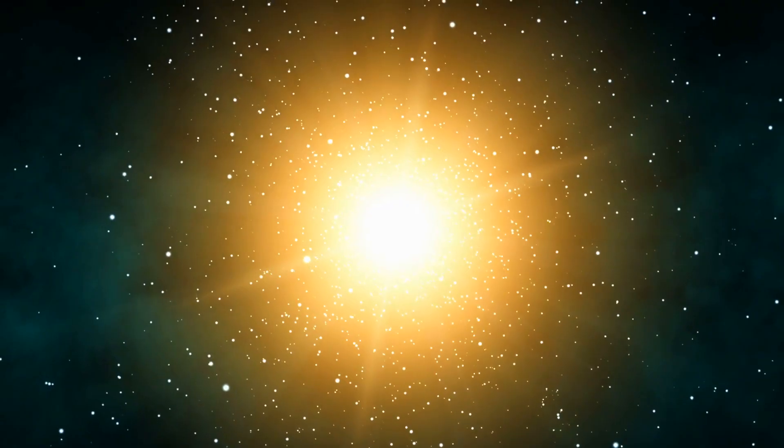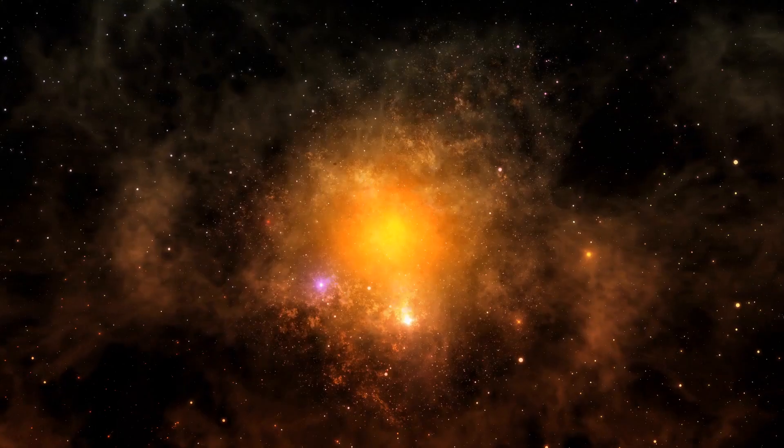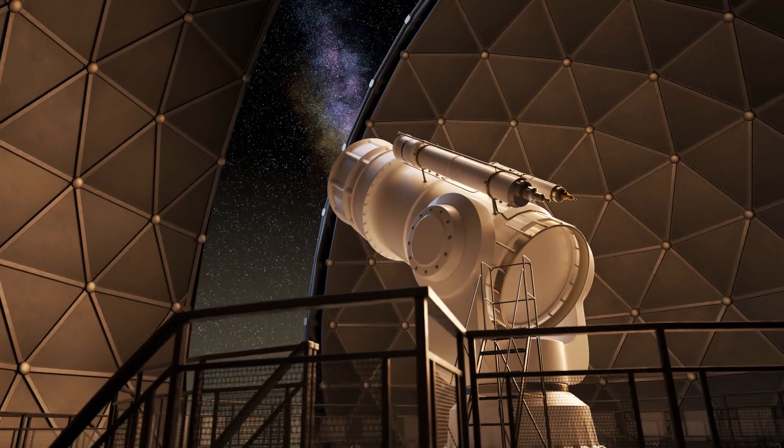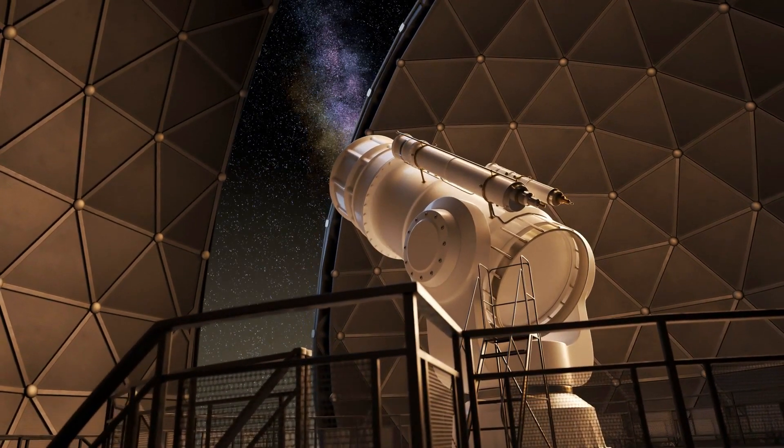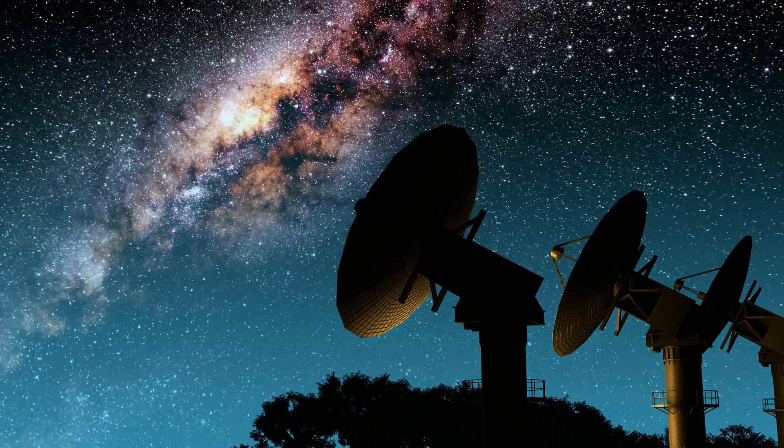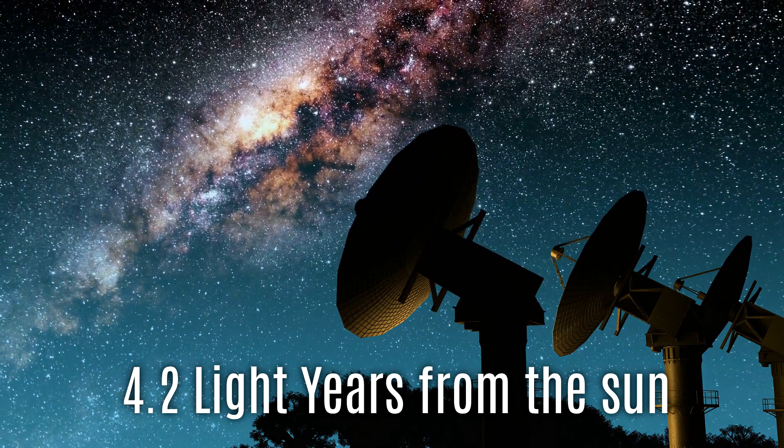Proxima Centauri is a red dwarf star that has a low mass, a long lifespan, and a cold surface temperature. However, in order to make out this star, a powerful telescope is required. However, it is the closest of the three, with a distance of 4.2 light-years from the Sun.